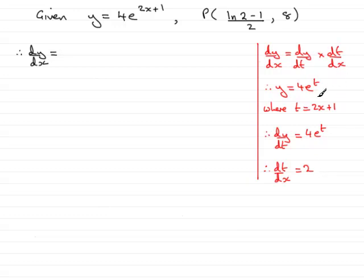So I need to put these values into dy/dx. dy/dx equals dy by dt, so that's 4e to the t, which is 4e to the 2x plus 1. But remember t was 2x plus 1, so we'll put that up there.